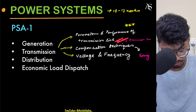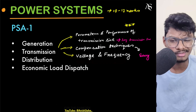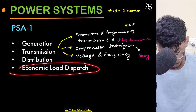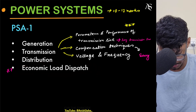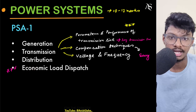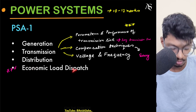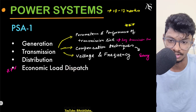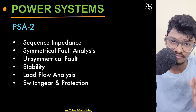Voltage and frequency control is also important, but you can skip it. Economic load dispatch is a newly added topic — generally one question comes, it is very simple, and it will not take more than two to three hours to study, so you must cover it.